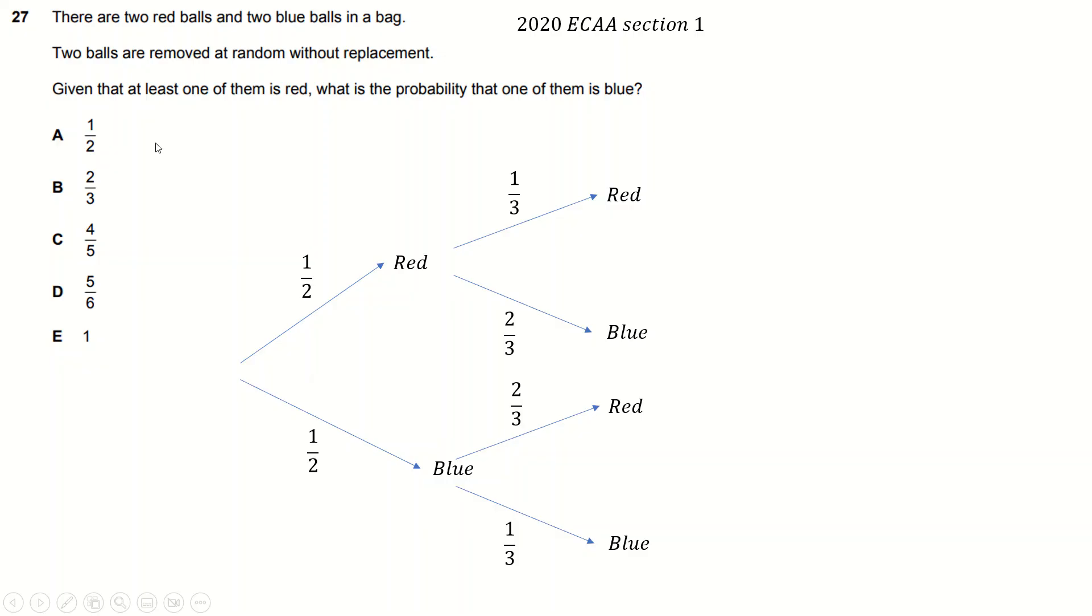The same kind of thing happens. You've taken a blue here, so you've only got one left, you've still got two reds left. Okay, given that one of them is red, now that means that we just want to work out the probability of there being a red ball. So that's either red-red, red-blue, or blue-red, which is the same as one minus blue-blue. So we'll just do that, one minus blue-blue. That's five-sixths. So the chance of there being a red one is five-sixths.